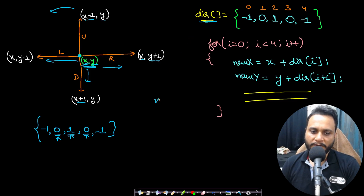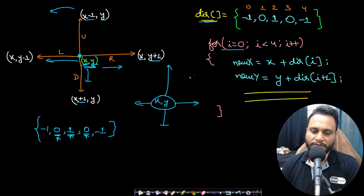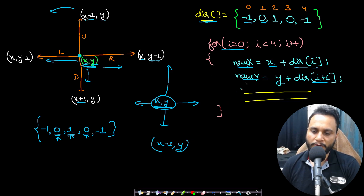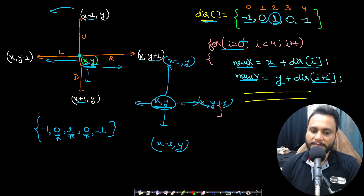Using the direction array, given a coordinate (x, y), you can calculate all four directional movements using a for loop. Your new x coordinate is x plus direction[i], and new y is y plus direction[i+1]. When i=0, direction[i] is -1 and direction[i+1] is 0, giving (x-1, y), which is moving up. When i=1, direction values give (x, y+1), which is moving right. Iterating four times covers up, right, down, and left in order. This is what will be used for recursion calls.